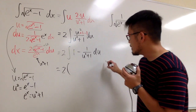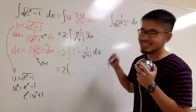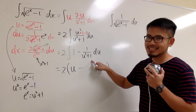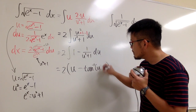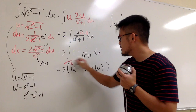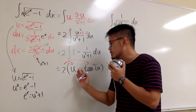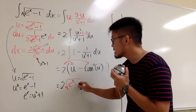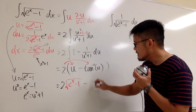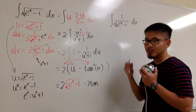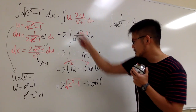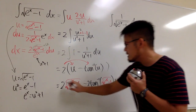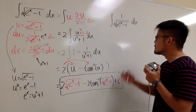Now we are ready to integrate. We have 2 times the integral of 1 minus 1 over u squared plus 1, du. The integral of 1 is just u, and the integral of 1 over u squared plus 1 is the inverse tangent of u. Distributing the 2 and back-substituting, where u equals the square root of e to the x minus 1, we get 2 times the square root of e to the x minus 1 minus 2 times the inverse tangent of the square root of e to the x minus 1, plus C.